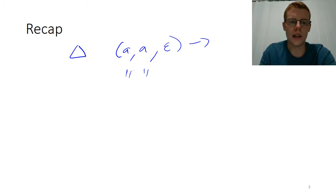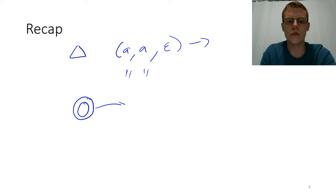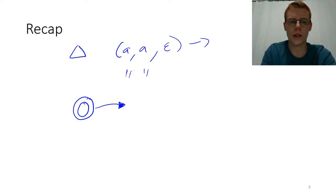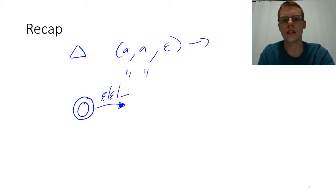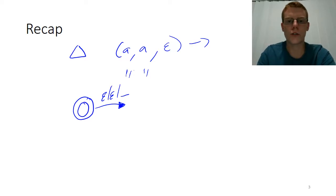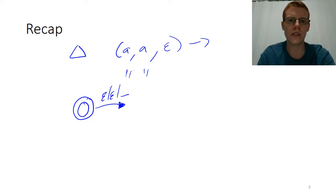The other condition is that whenever we are in an accepting state, we have no way to move out of that accepting state without consuming any input or looking at the stack — so we don't have any epsilon, epsilon, whatever transitions out of that state. Basically, as we progress through the pushdown automata, we don't have any choices between options at any point, and when we get to an accepting configuration, we stop and accept. There are no ways to move out into a rejecting configuration.